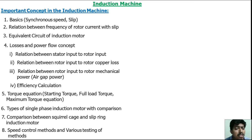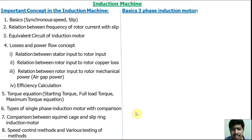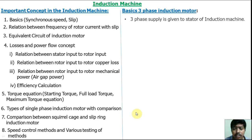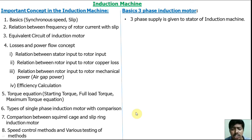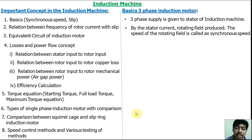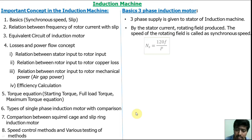In this part one video, we discuss the basics of a three-phase induction machine. The three-phase supply is given to the stator. In the stator there are three coils, each separated by 120 degrees. When three-phase supply is given to the stator winding, a rotating field is produced. The speed of the rotating field is called the synchronous speed. The relation is: Ns (synchronous speed) = 120f / P.